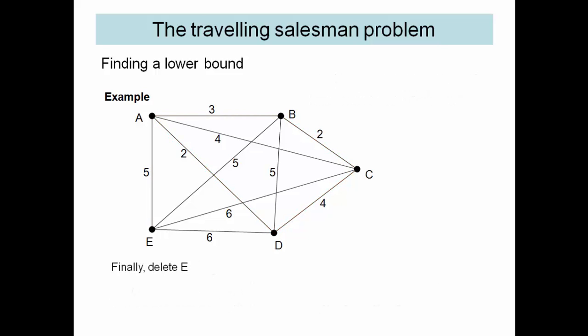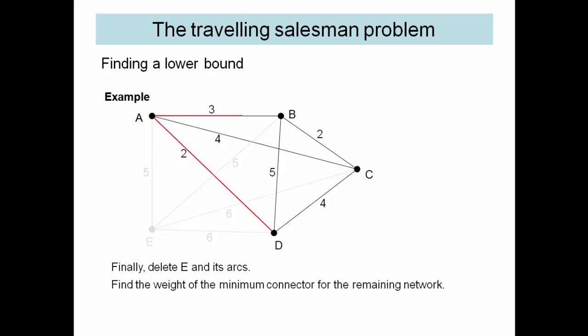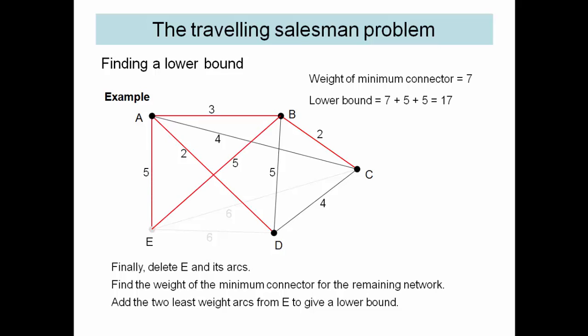And then finally delete E. This time much smaller minimum connector, but the arcs going into E have got bigger weight. So we add 10 and we get a lower bound of 17.